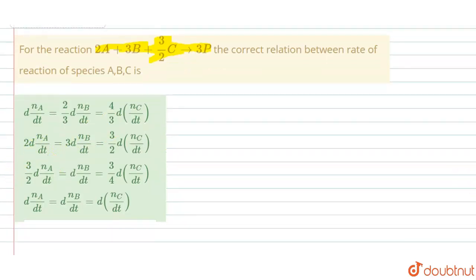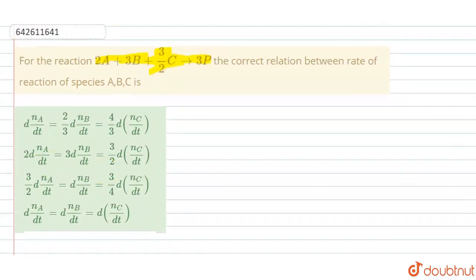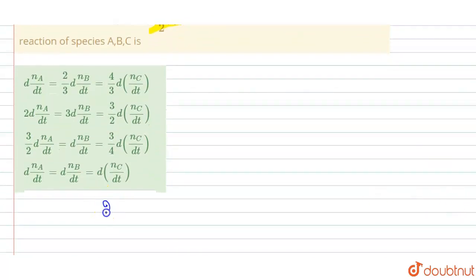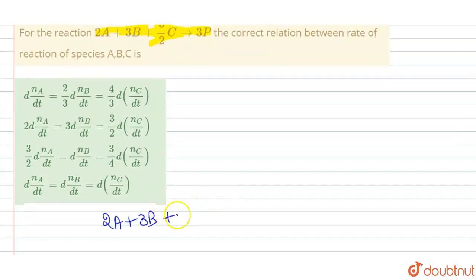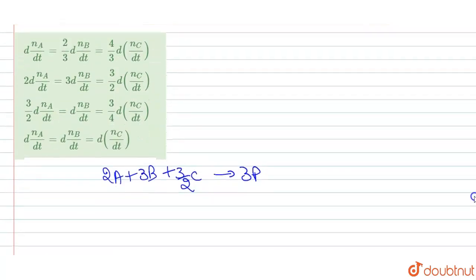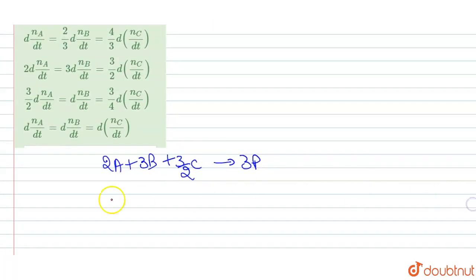The rate of reaction is defined per mole of reactant or product. The reaction given in the question is 2A + 3B + 3/2C converts to 3P. We will now write the expression of rate of reaction in terms of A, B, and C.